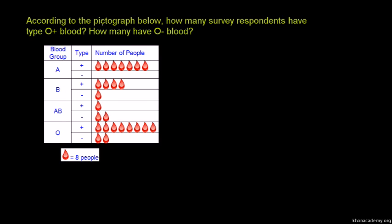What is the pictograph? The respondents surveyed have type O positive blood and type O negative blood. The pictograph relates pictures to the data.